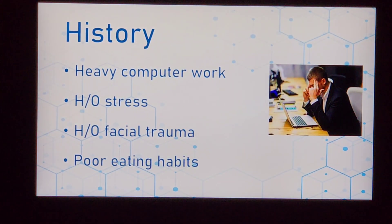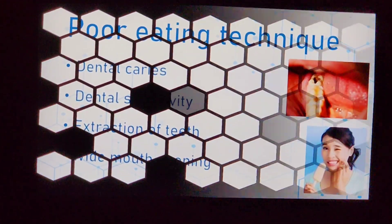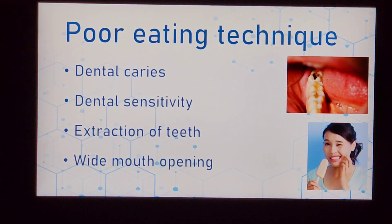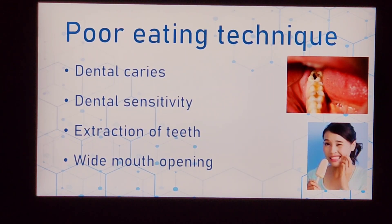When you ask patients about their work history, most of them have heavy computer work, are under stress, and have poor eating habits — all of which can result in TMJ dysfunction. For example, if they have dental caries on the right side, they tend to eat on the left side, which makes that particular side's joint overactive and results in muscle spasm, leading to dysfunction.